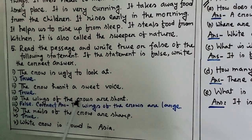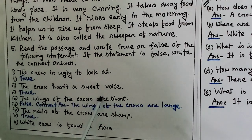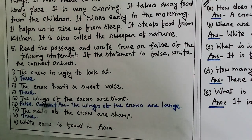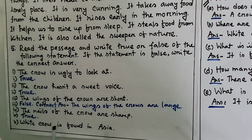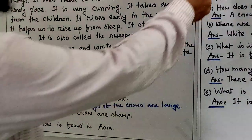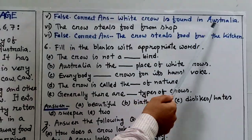Statement 3: The wings of the crows are short — this is false, because the wings of the crows are long. Correct answer: the wings of the crows are large. Statement 4: The nails of the crows are sharp — this is true. Statement 5: White crows are found in Asia — this is false. Correct answer: white crows are found in Australia.